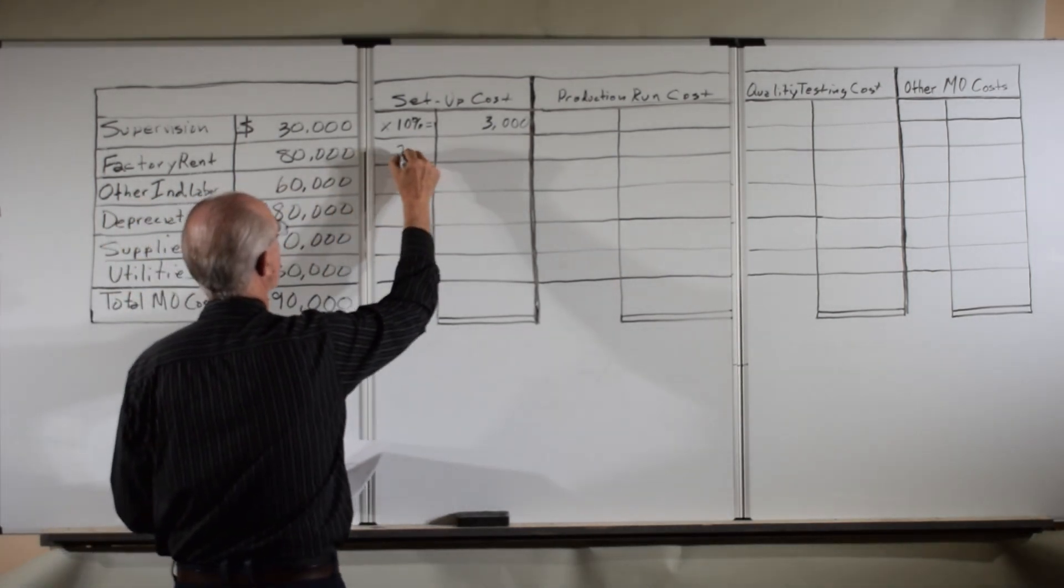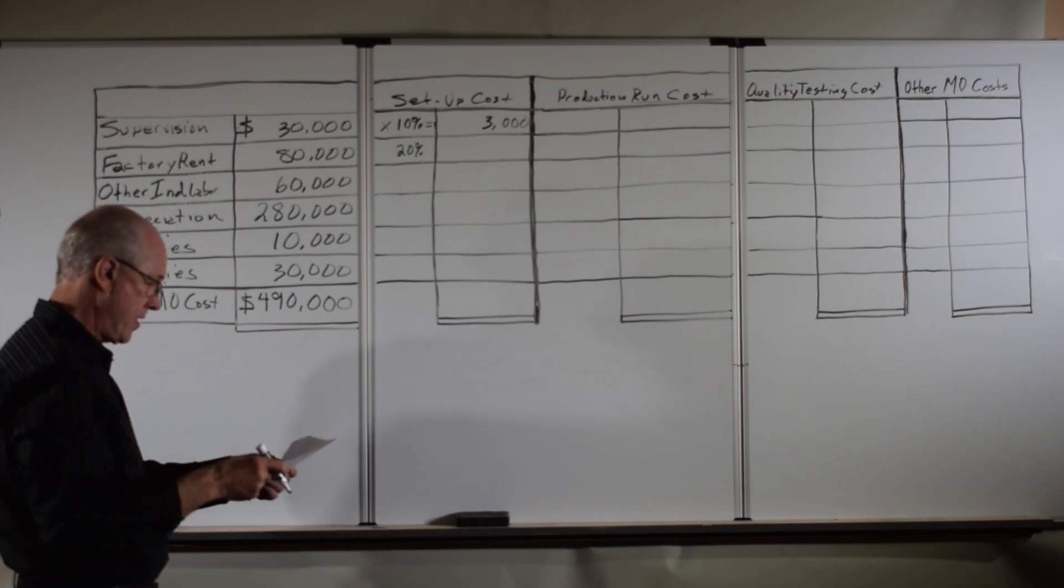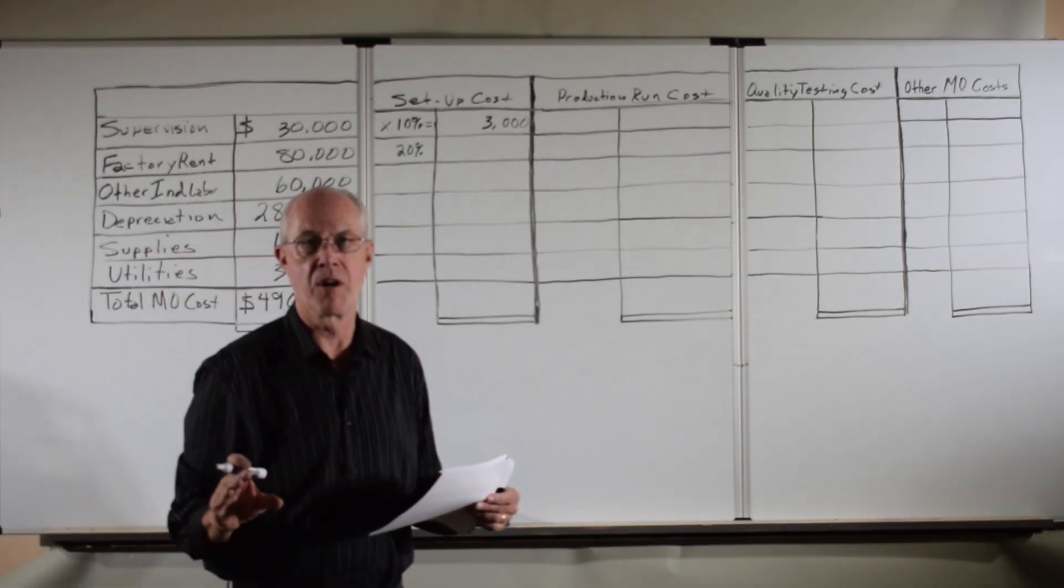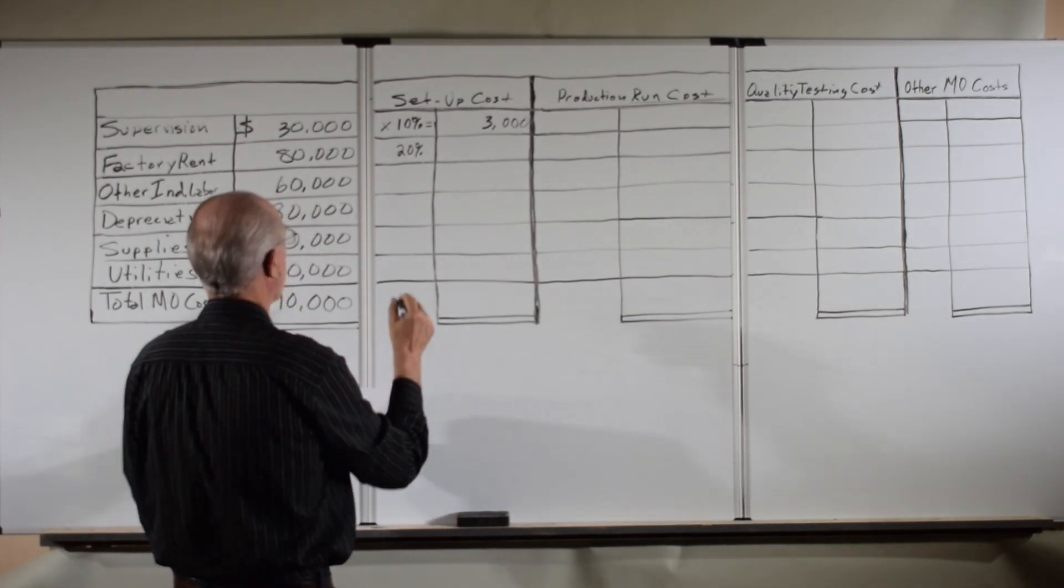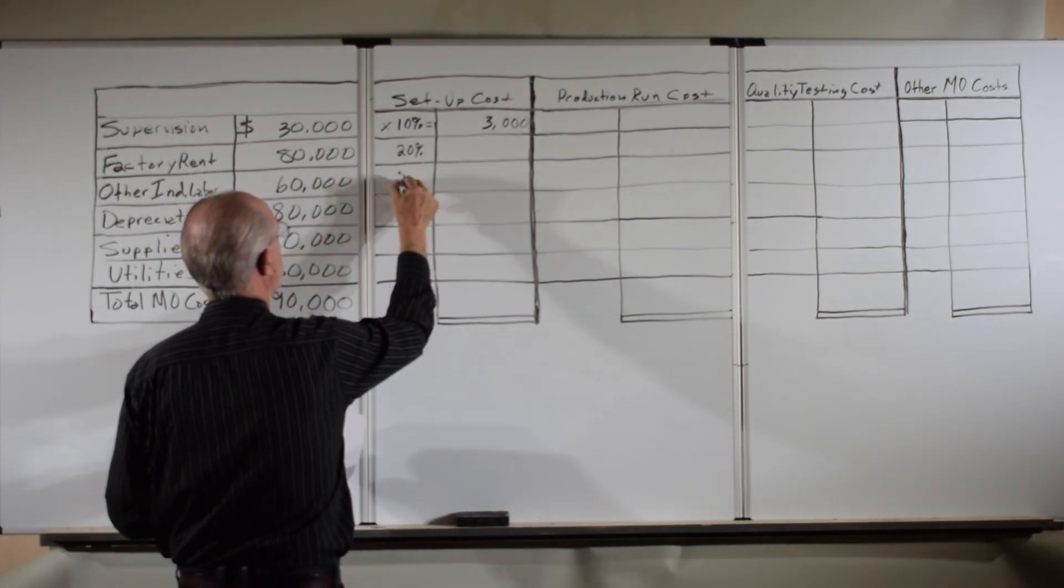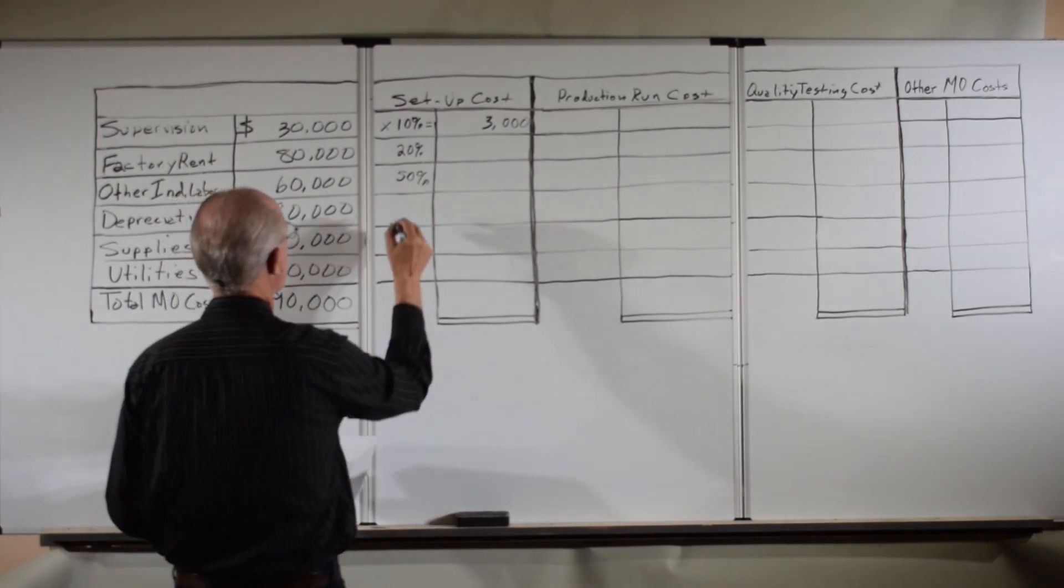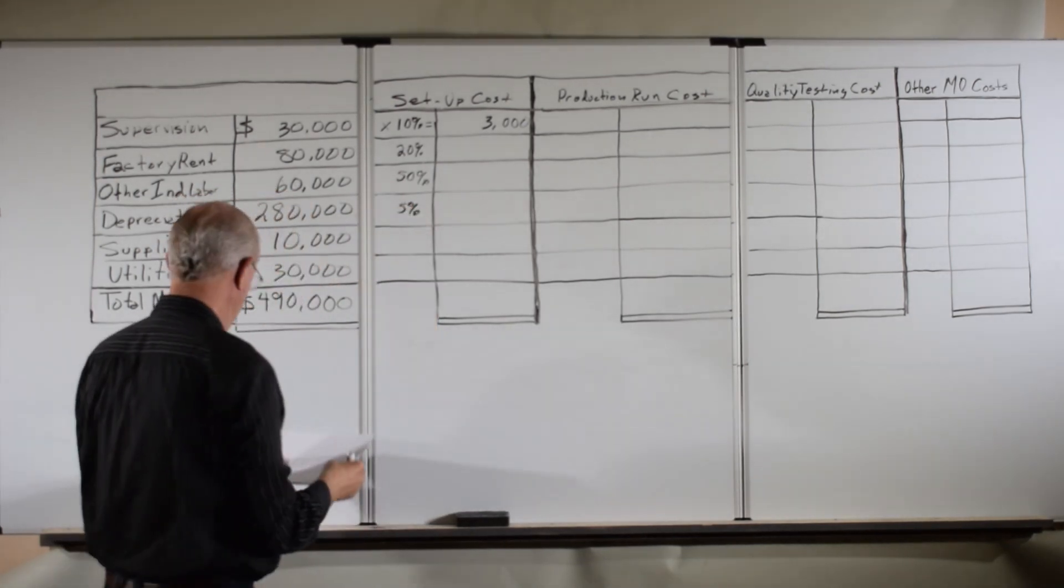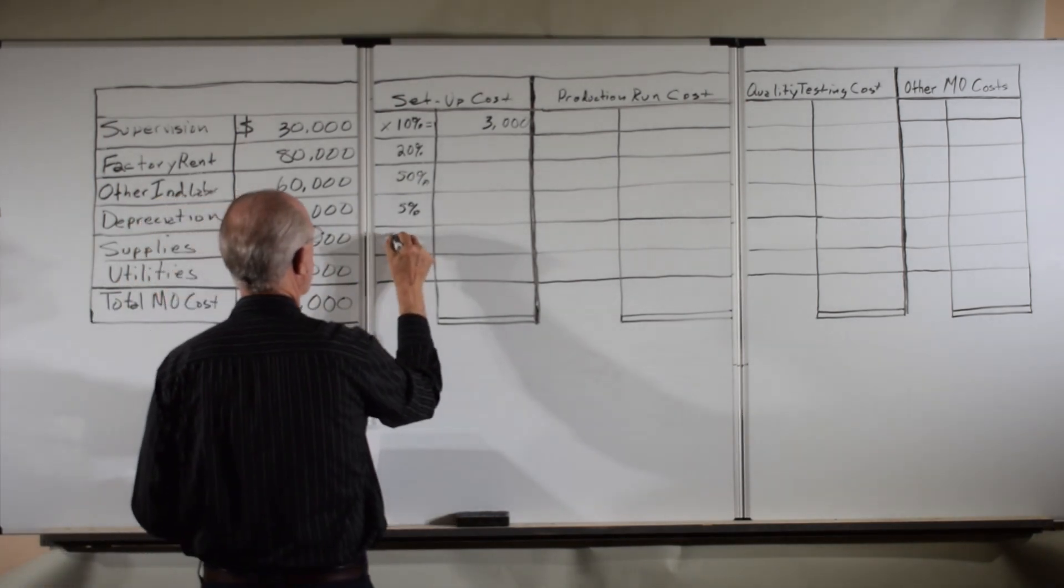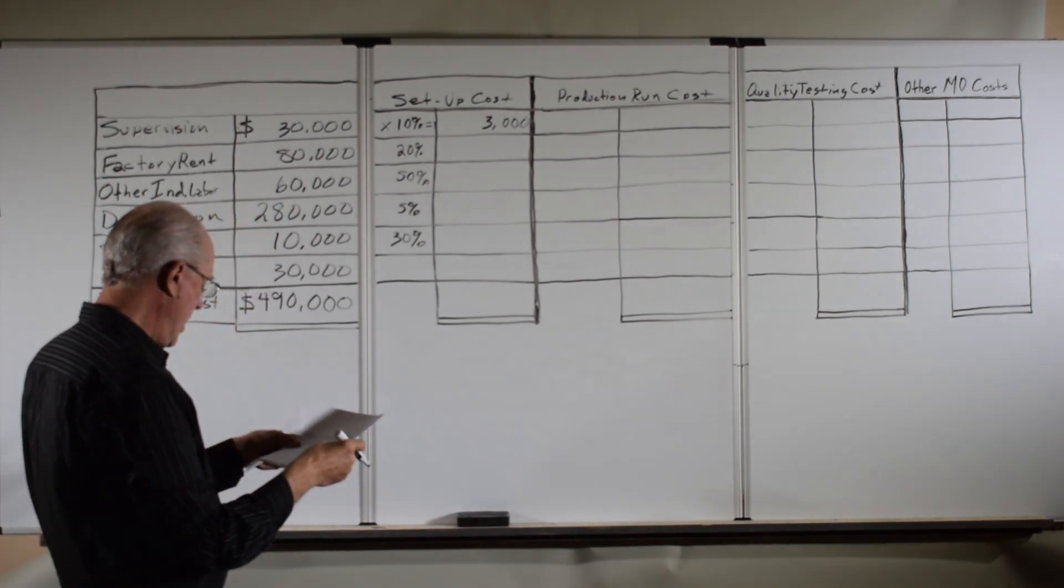The next thing I want to do is jot them down for you. Factory rent: 20% is used by the setup area. Actually, a lot of the indirect labor is involved with setup. So setup uses 50% of the indirect labor. Of depreciation, they don't use too much equipment, it's only 5%.